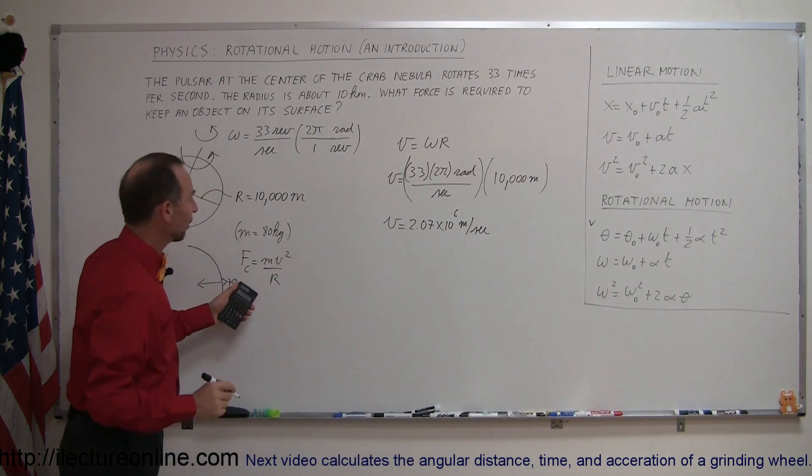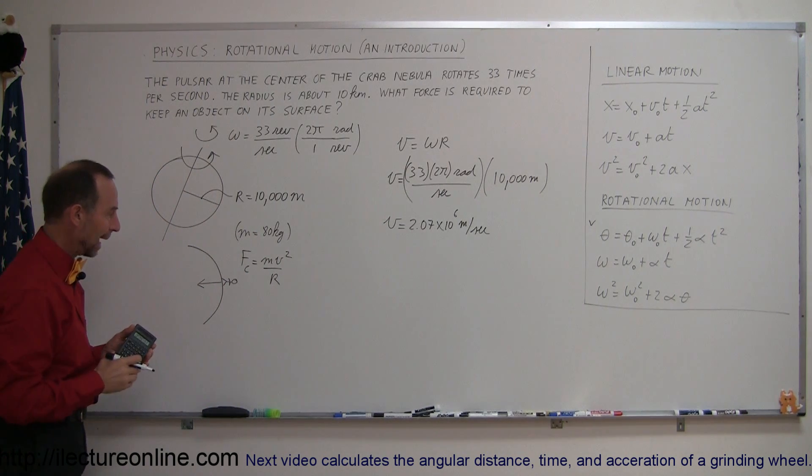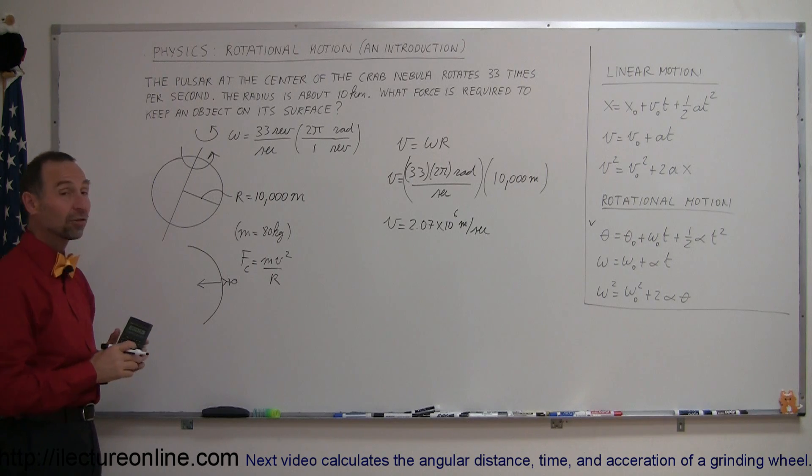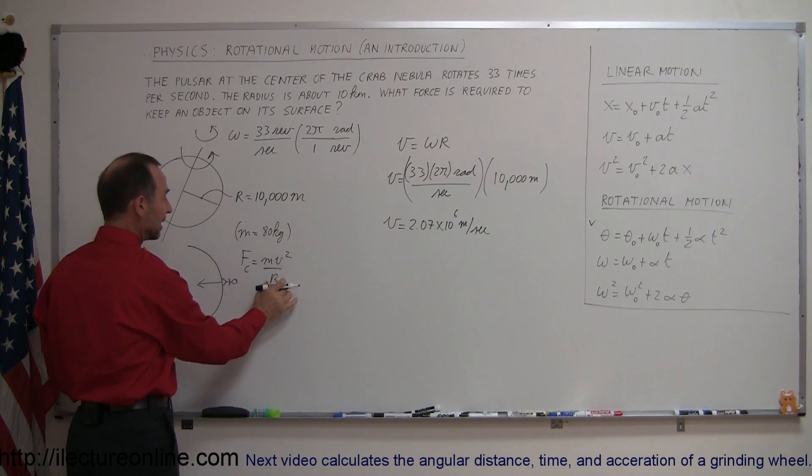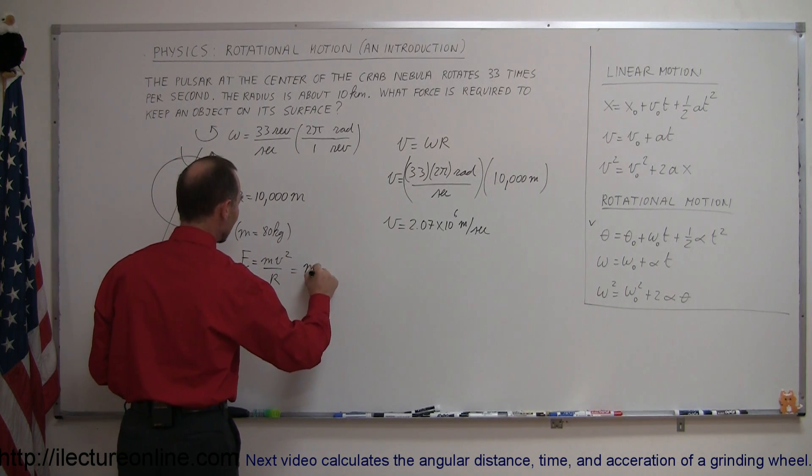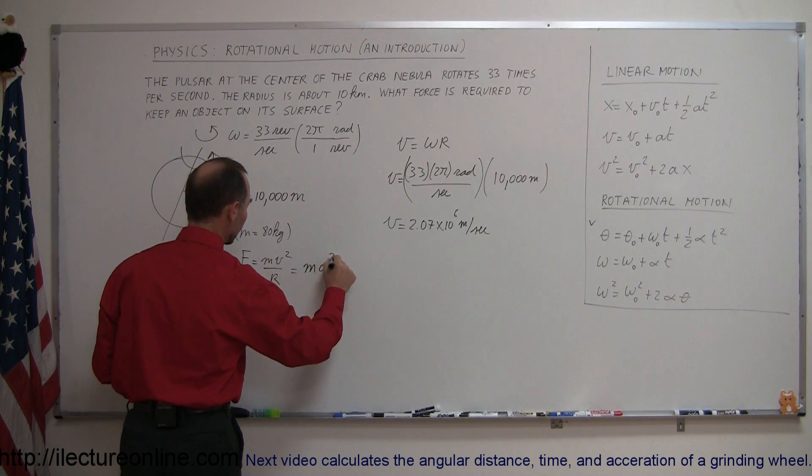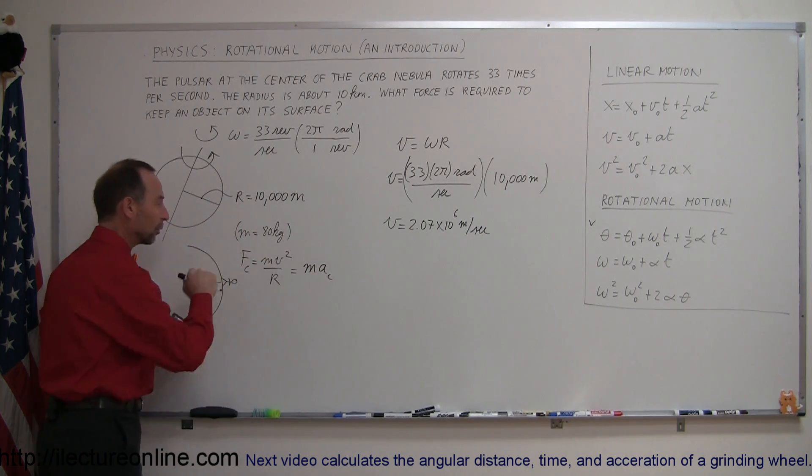So now we plug that in here, remember this is from rotational motion that we did back in the days when we talked about Newton's second law. The centripetal force is equal to the mass times the tangential, or I should say radial acceleration, so this is m times a centripetal, not squared, but ma. So this comes from Newton's second law in rotational motion.